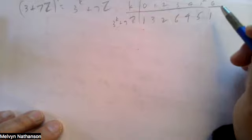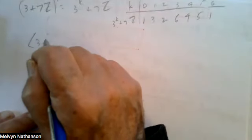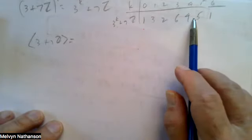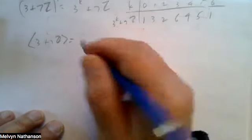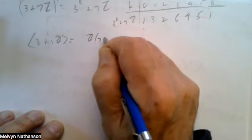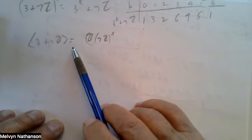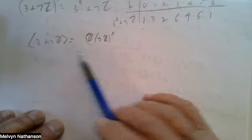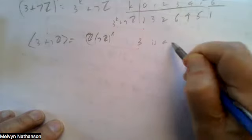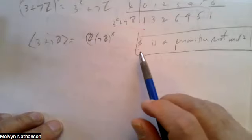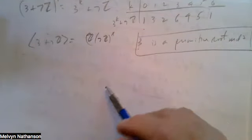So the cyclic subgroup generated by 3+7Z gives every congruence class 1 through 6 mod 7 — this is the whole group Z mod 7Z*. In particular, every congruence class relatively prime to 7 is a power of 3 mod 7, so 3 is a primitive root mod 7. The cyclic subgroup generated by that element is the whole group of units mod 7.